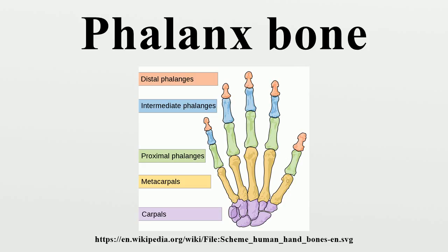The giraffe, the largest even-toed ungulate, has large terminal phalanges fused with metacarpal bones able to absorb the stress from running. The sloth spends its life hanging upside down from branches, and has highly specialized third and fourth digits for that purpose. They have short and squat proximal phalanges with much longer terminal phalanges, vestigial second and fifth metacarpals, and their palm extends to the distal interphalangeal joints. The arboreal specialization of these terminal phalanges makes it impossible for the sloth to walk on the ground, where the animal has to drag its body with its claws.